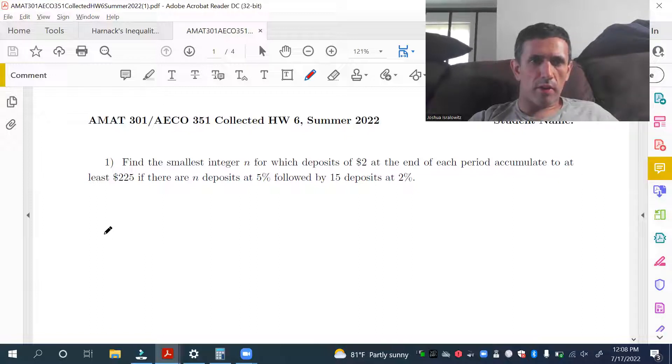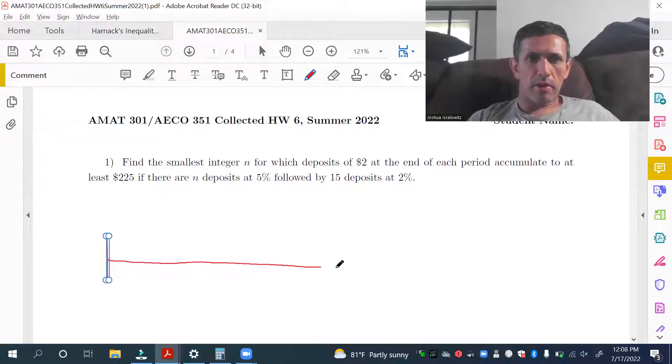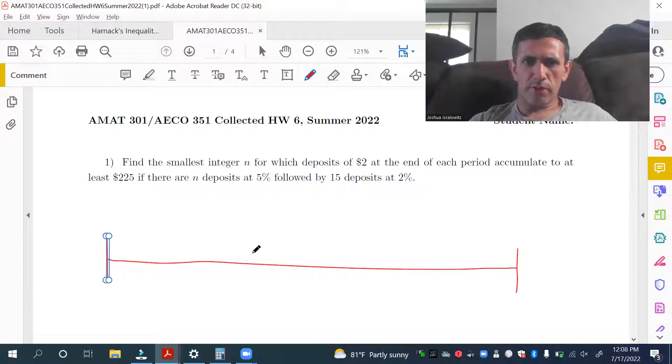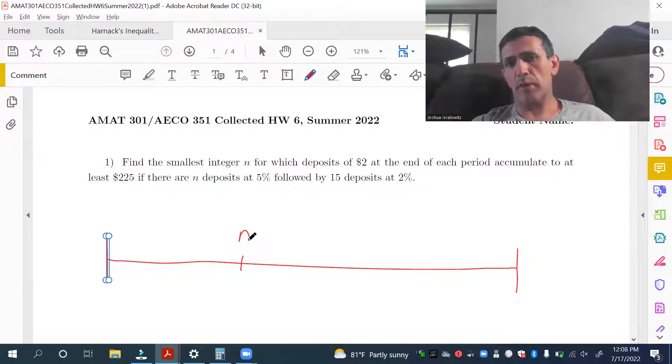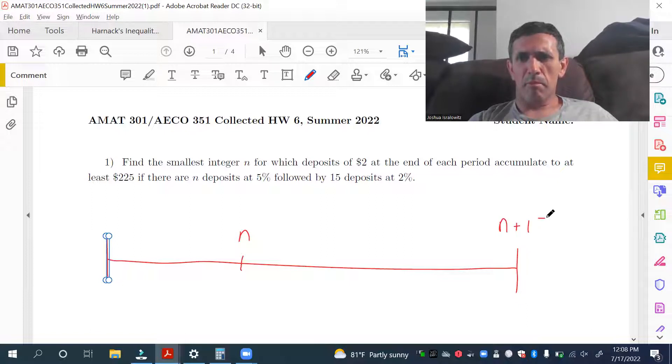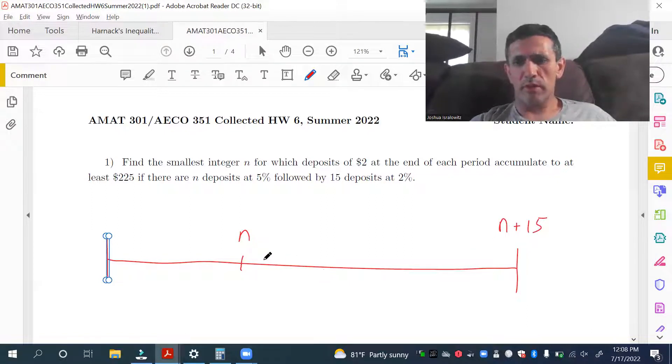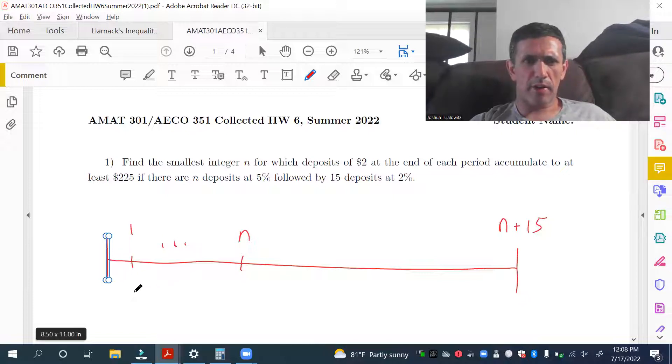If there are end deposits at 5% followed by 15 deposits at 2%. So for a problem like this, I would probably draw a time diagram. I think I actually first tried this before I had a chance to really review for this course, and I tried it without doing a time diagram. I think I got it wrong. After reviewing a little bit, I realized this was kind of silly. Definitely draw the time diagram, get an idea of what's going on.